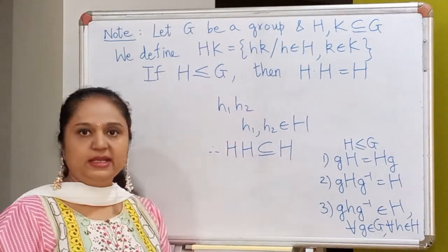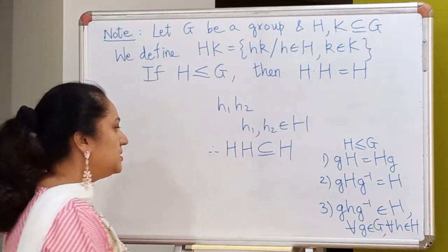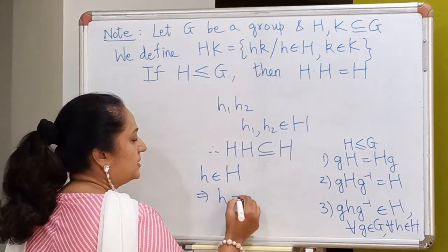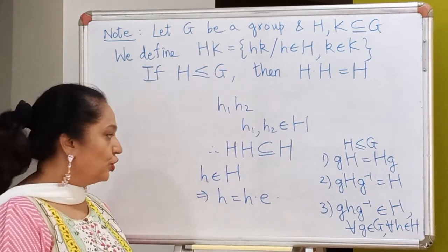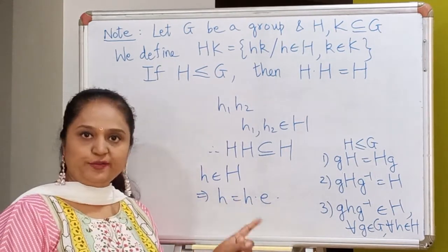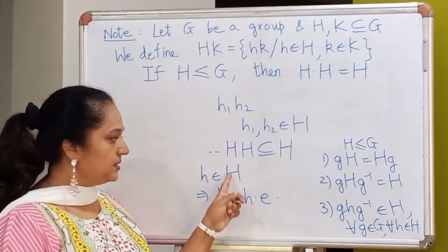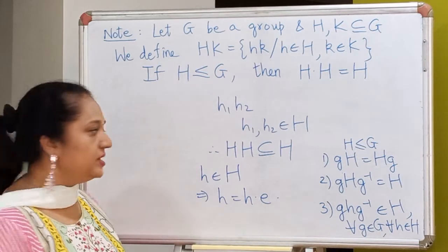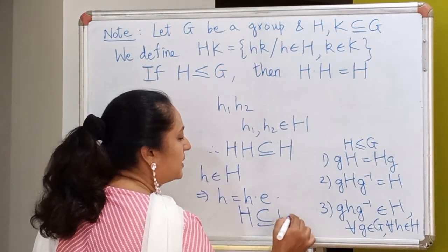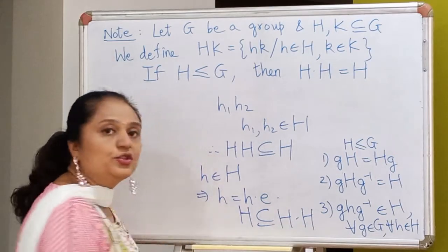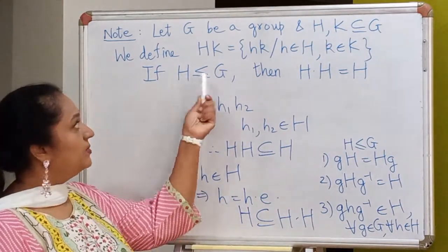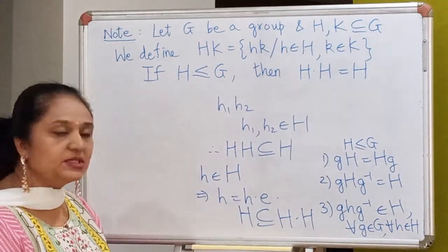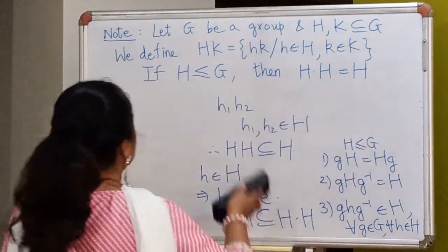The converse is easy to prove. You take any element in H and write it as h times e. The first element is inside H, and the second element is also inside H because the identity lies inside every subgroup. So H will be a subset of this set. Therefore, if H is a subgroup, then H·H equals H. Keep this in mind when we prove the next result.